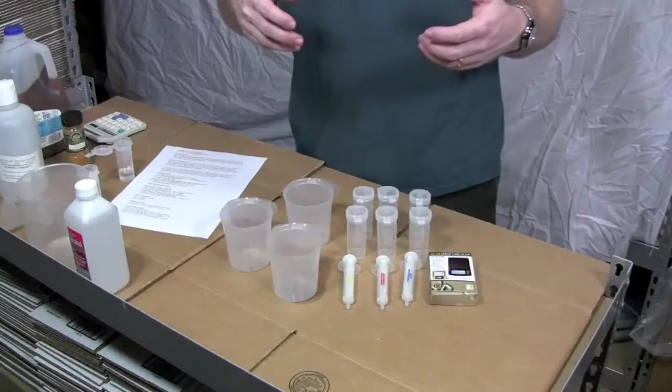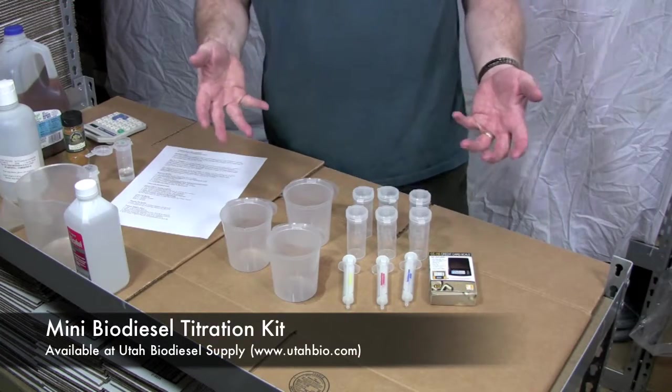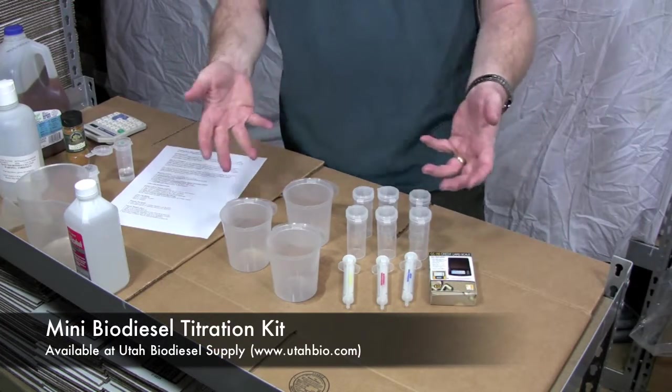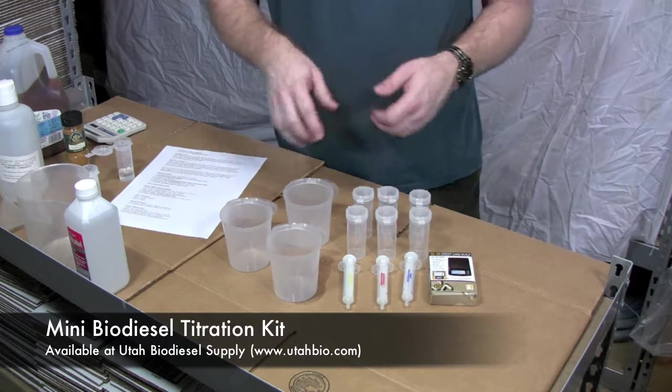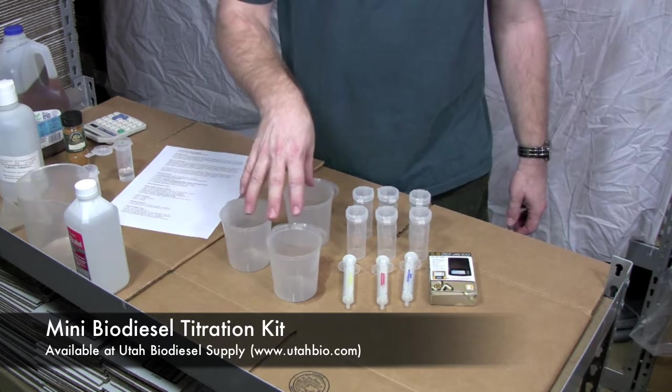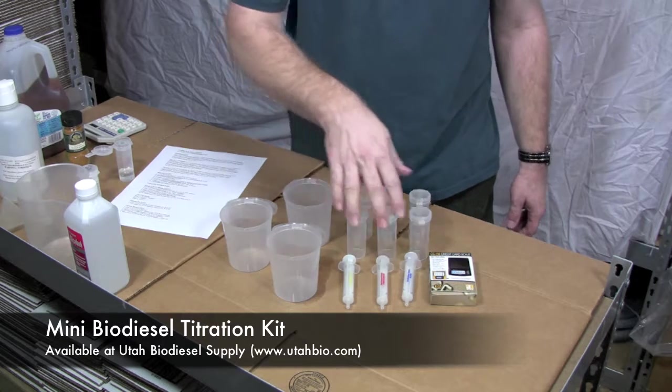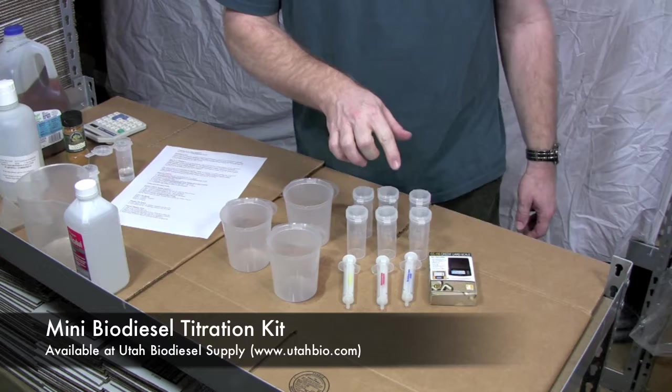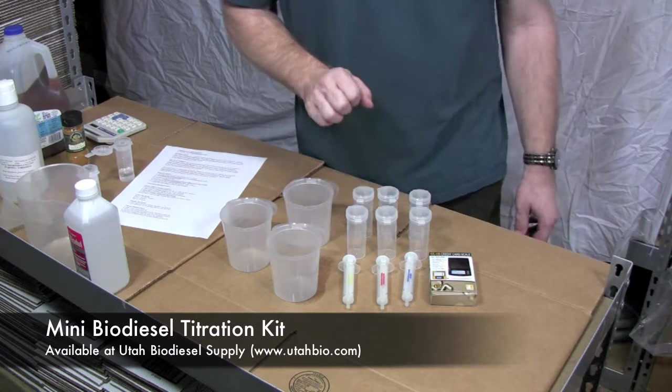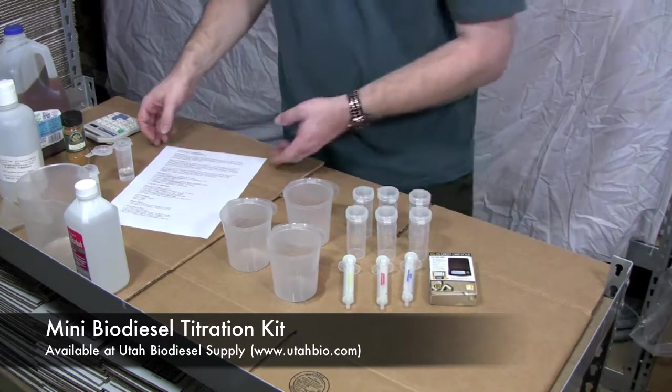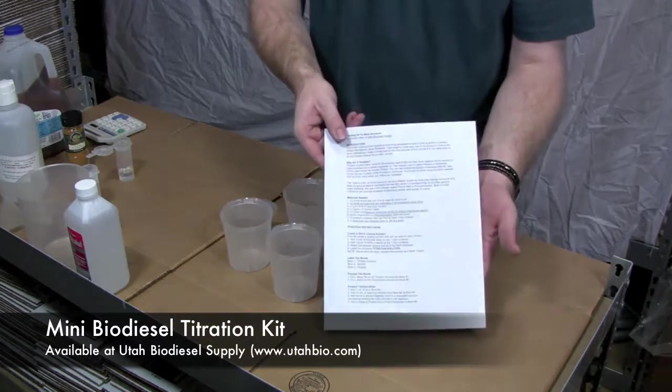I'm going to show you some of the things that we get in a kit from Utah Biodiesel Supply. Today we're going to show you our mini basic biodiesel titration kit. This comes with three jars to put your samples in, six vials to do the titration in itself, three syringes to test the oil, alcohol and titration solution with, a mini scale to weigh things out and a full set of instructions.